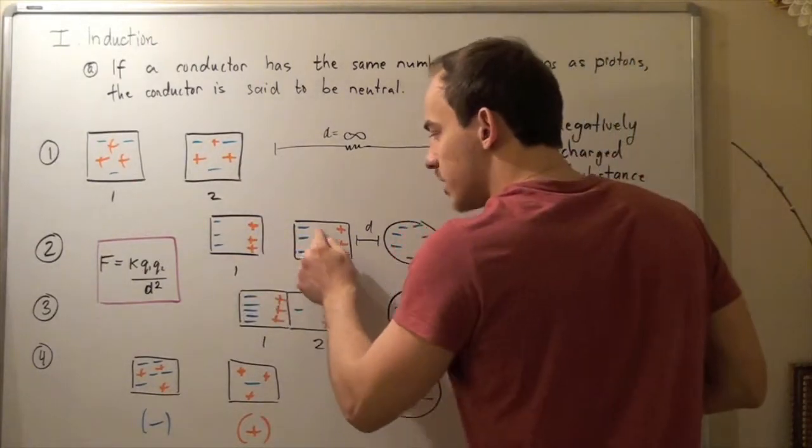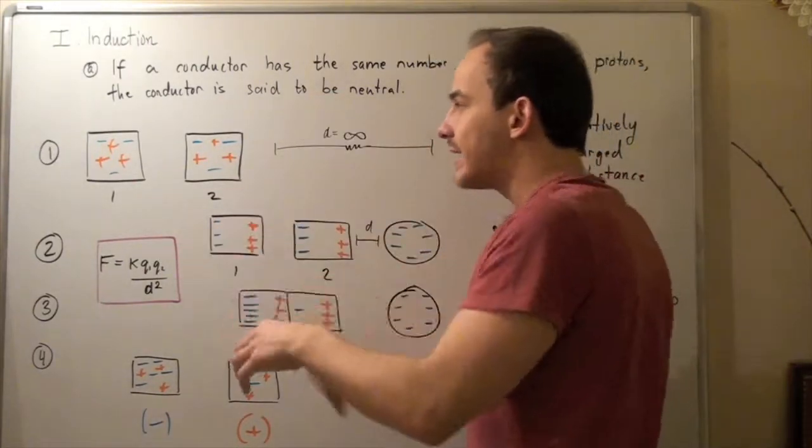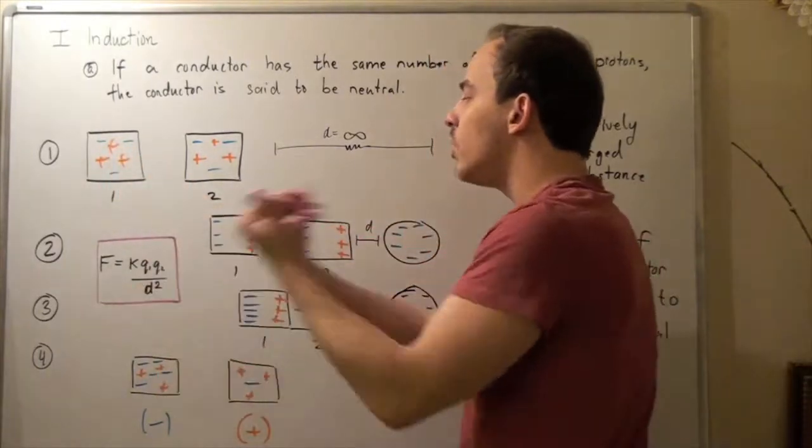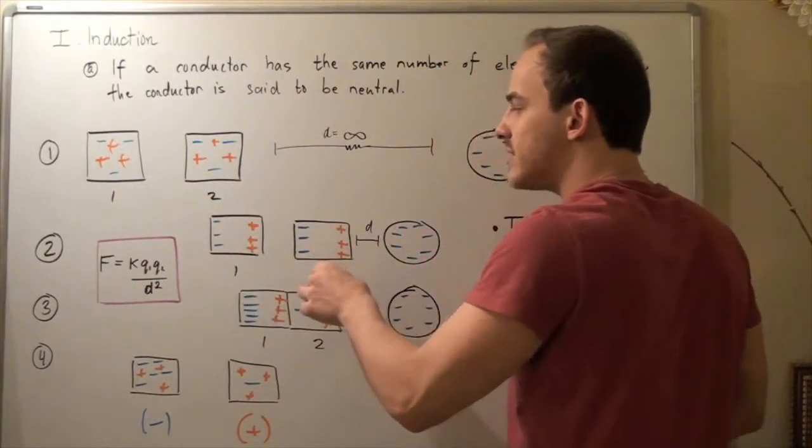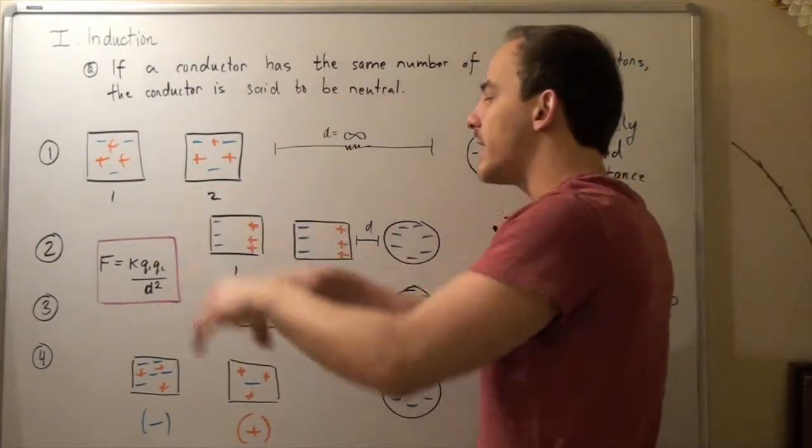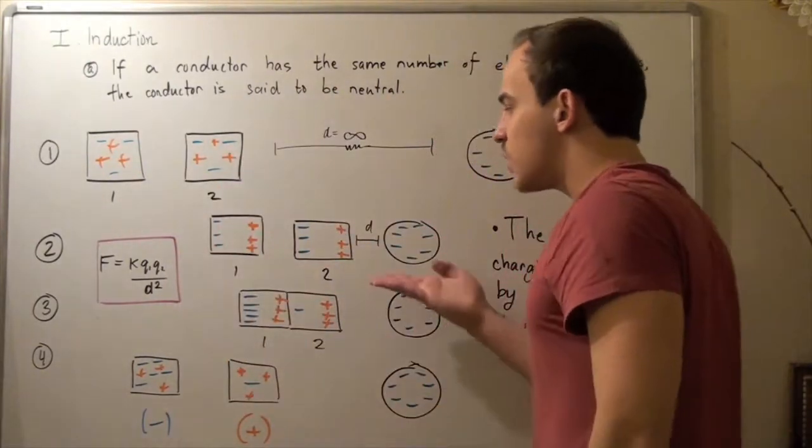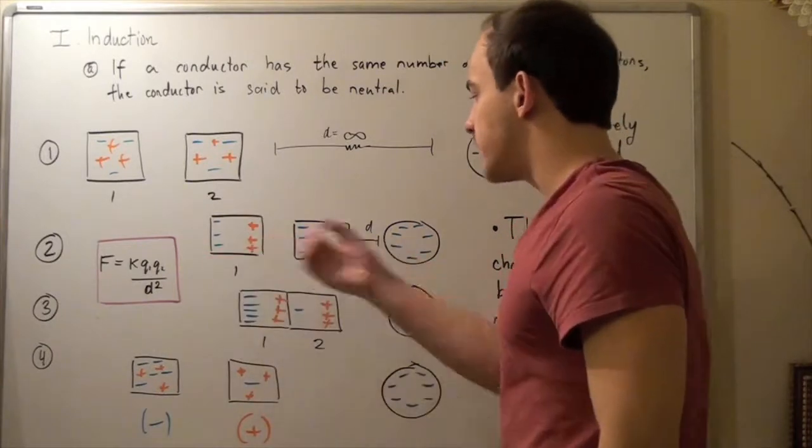So these electrons will affect these protons and pull them to this side, and these electrons will at the same time repel these electrons and cause them to migrate to that side. This is how they're going to orient themselves.